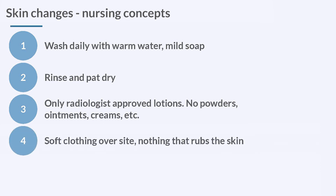Number four, we're going to have soft clothing only over the site. We can't have anything touching the site that's going to rub the skin, because that will further irritate the skin — it's very vulnerable after radiation. And the last thing is not to expose the patient's skin to any sun or heat, because both of these are a form of radiation and the skin can no longer handle this like it used to.